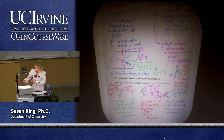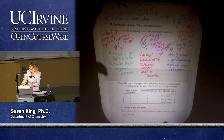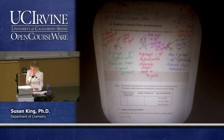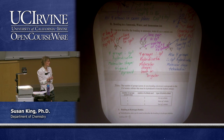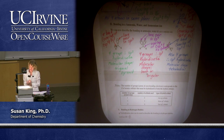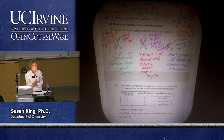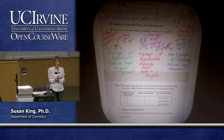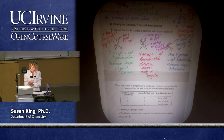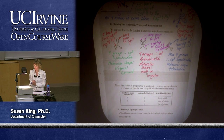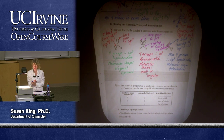The number of groups corresponds to the number of atomic orbitals hybridized to form the hybrid orbitals. With two groups, we hybridize S and P to make two SP orbitals. With three groups, we hybridize one S and two P's to make three SP2 orbitals. With four groups, we have four SP3 orbitals. That's always the case — it makes hybridization easy to remember.